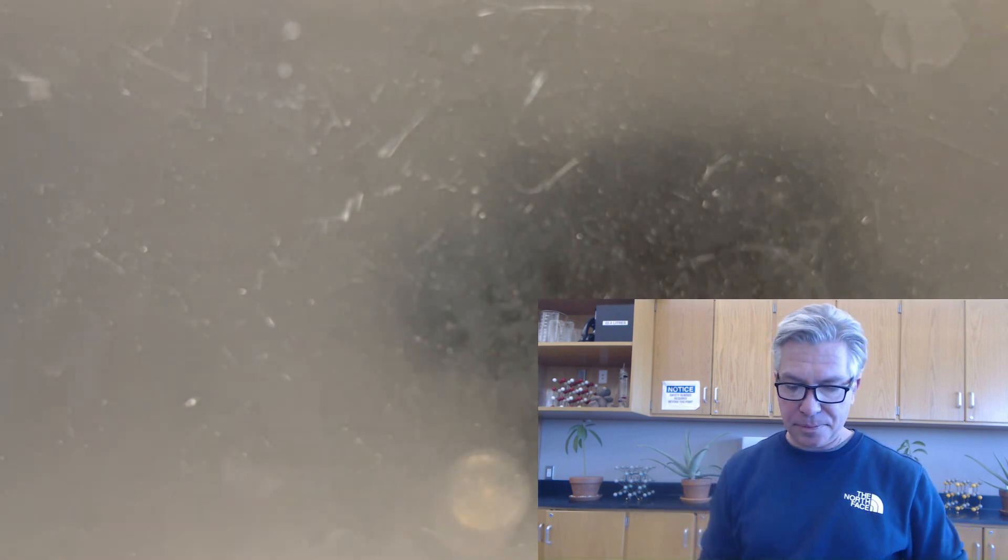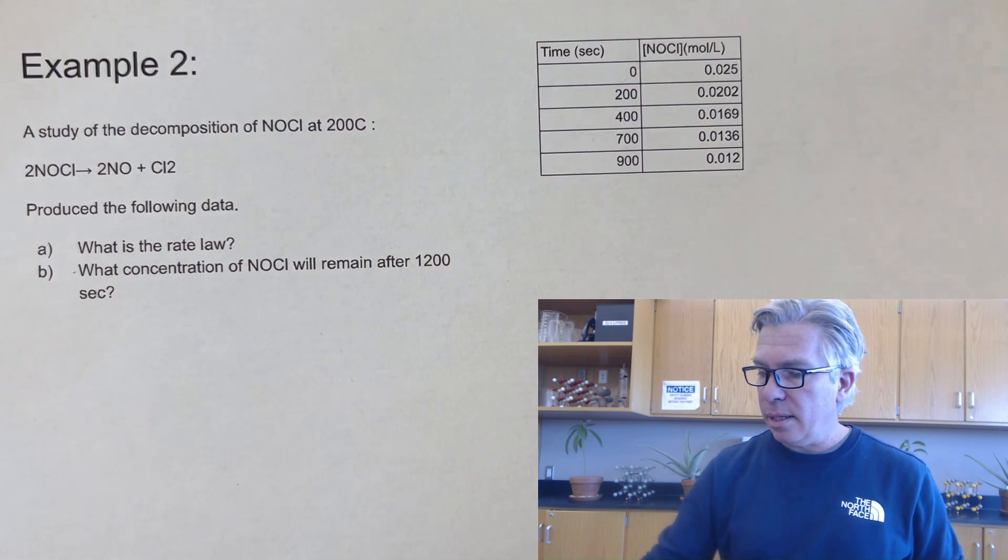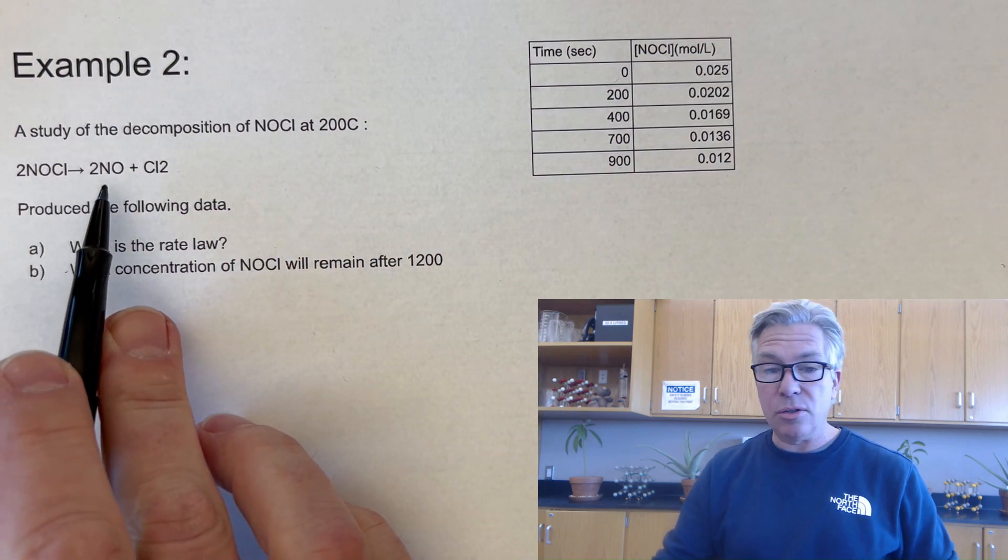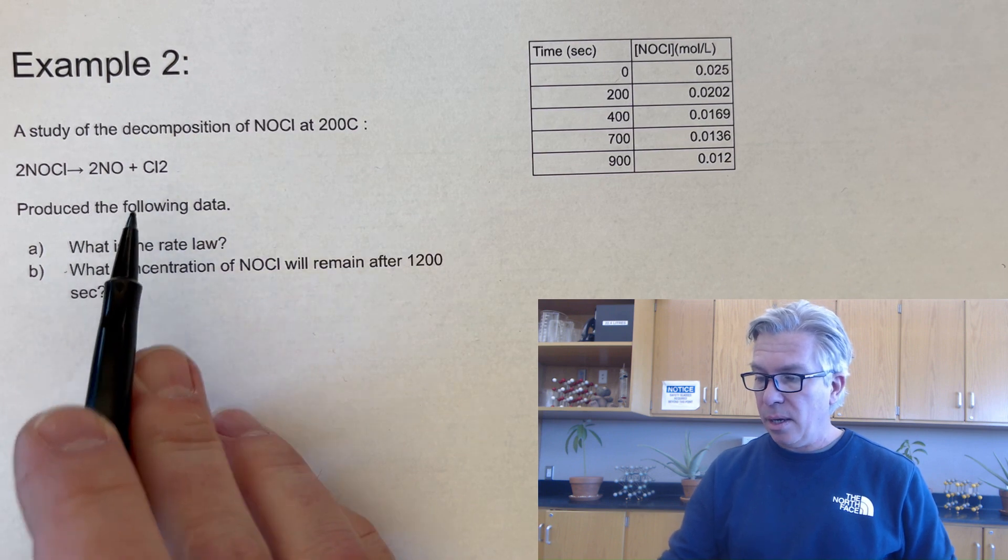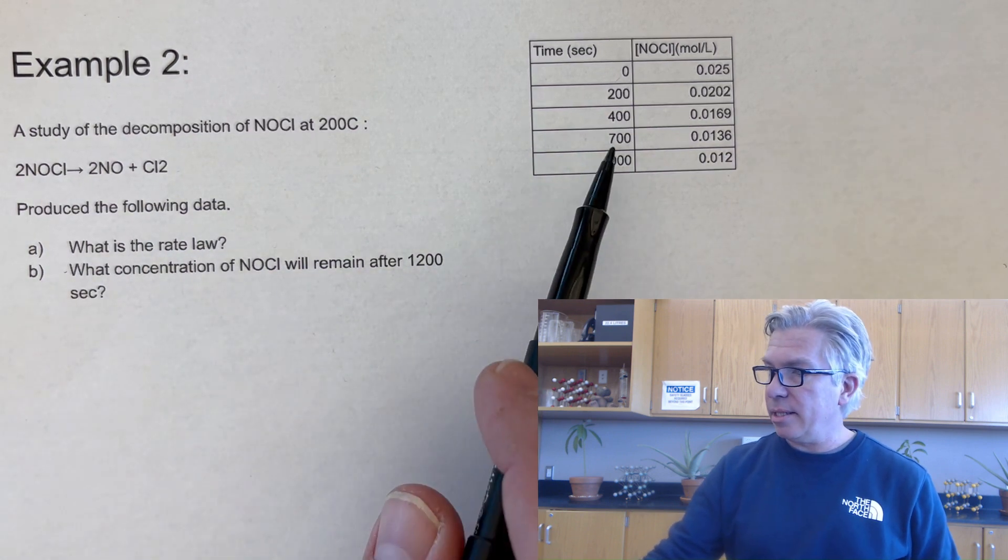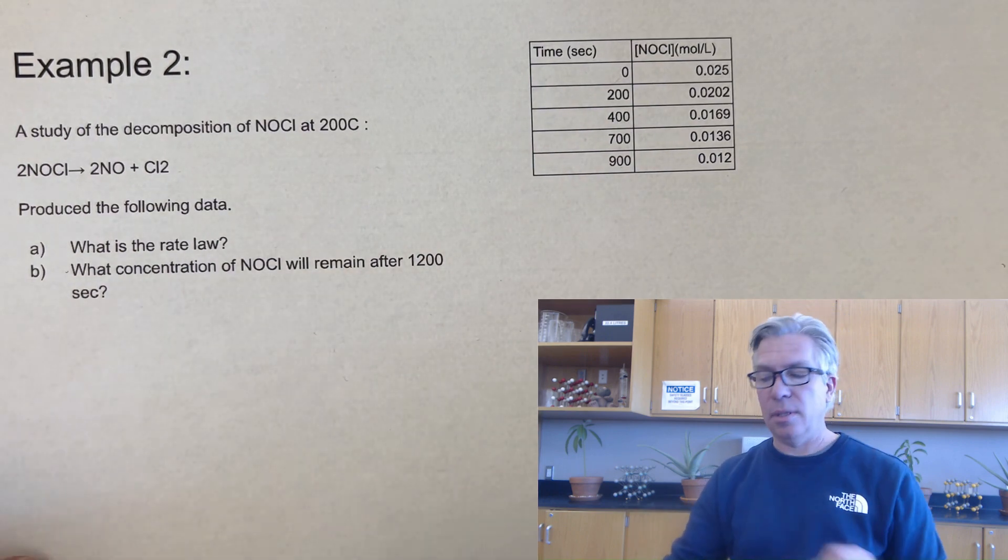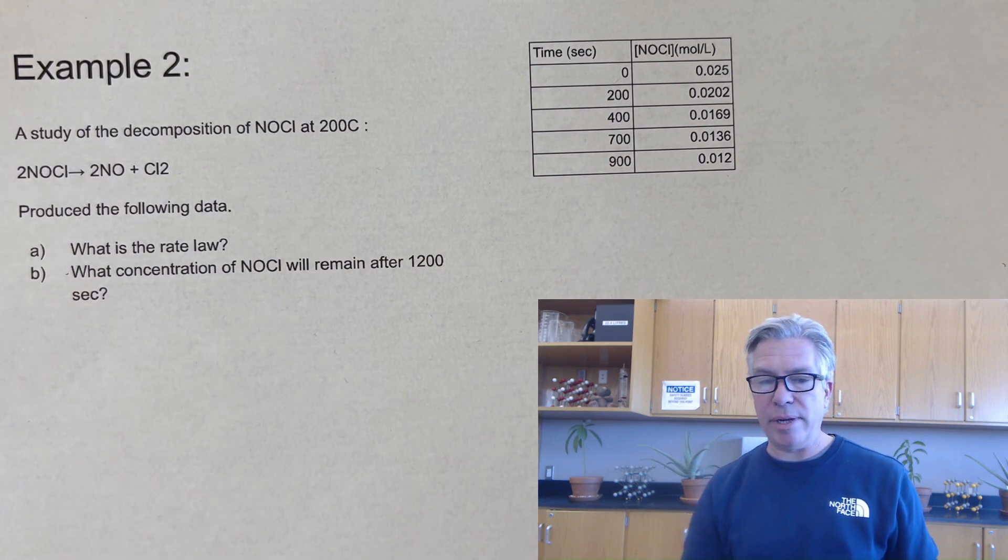All right. Next example. In this example, we have NOCl decomposing into two NOs and a Cl2. Produced the following data. There it is. That's what they gave me. And what is the rate law? And then what concentration will remain after 1200 seconds?